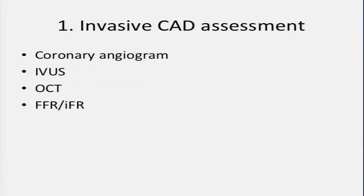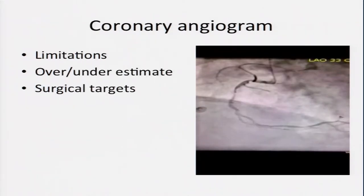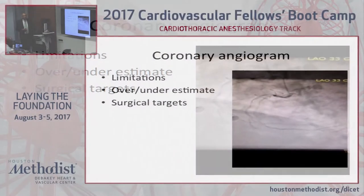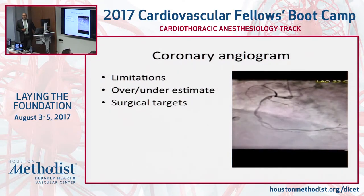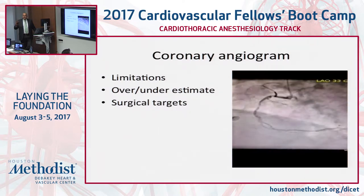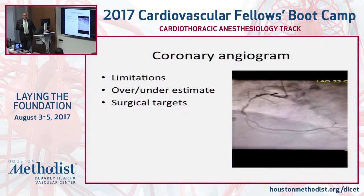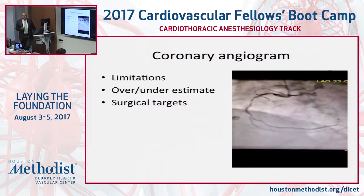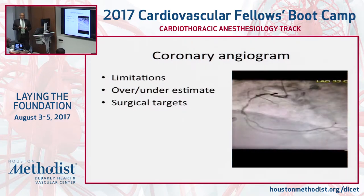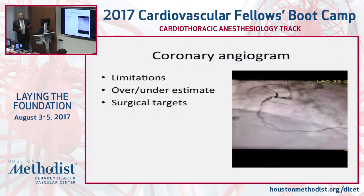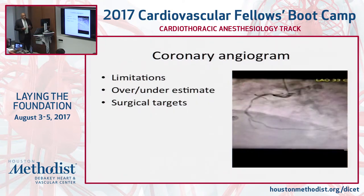First is coronary angiography, IVUS, OCT, FFR, IFR — this is what we do in the cath lab to assess coronary artery disease. The obvious things are obvious on a coronary angiogram: LAD, RCA, CERC. But the number one limitation is that coronary angiogram completely underestimates plaque burden. You almost sometimes have to have 40% plaque buildup before luminal narrowing happens because of positive remodeling — human arteries are designed to accommodate blood flow. What we are doing is a luminogram, and that's why there are issues with overestimation and underestimation.